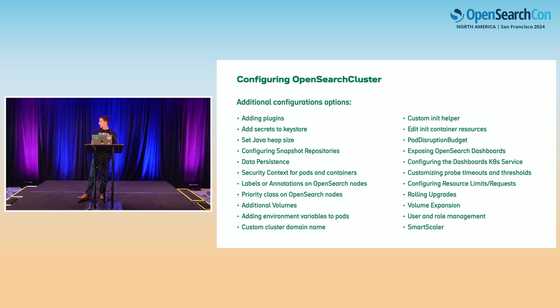This is not a full list, but it covers the gist of what's available in OpenSearch operator that you can configure. The one I want to draw your attention to most is SmartScaler. If you need to downscale your OpenSearch cluster, previously there was no way to drain a node — you'd have to go in manually, drain it, and then remove it. With the operator now, you can reduce the number of nodes and before killing that node, it will drain it first and then remove it. That's a very handy tool.